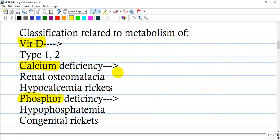This is a classification of rickets related to vitamin D, calcium, or phosphorus. There are two types of vitamin D deficiency. There's also calcium deficiency such as renal osteomalacia, which means the kidneys do not reabsorb calcium. This is a big problem as parathyroid hormone is increased but cannot compensate, as calcium is lost permanently.